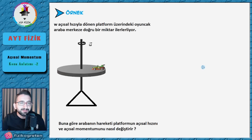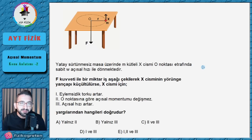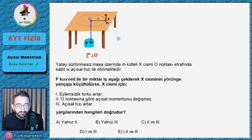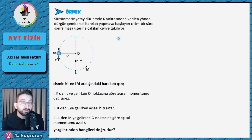Başka bir örnek: yukarıda X cismi dönüyor, siz ipi F kuvvetiyle aşağı doğru çekerseniz, F kuvvetinin uzantısı dönme noktasından geçiyor. Bu sisteme bir kuvvet etki ediyor ama bu kuvvetin torku yok. Tork sıfırsa açsal momentum korunur diyeceğiz ve üst taraftaki dönen cismin açsal momentumunu koruyarak soruyu çözeceğiz.